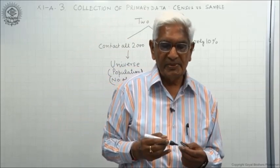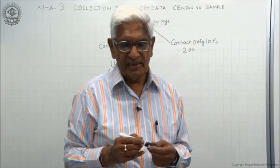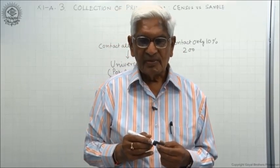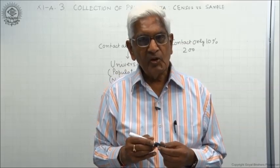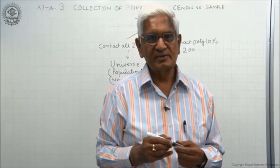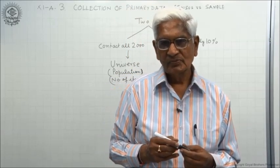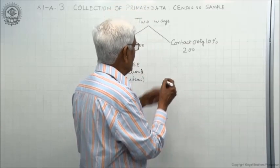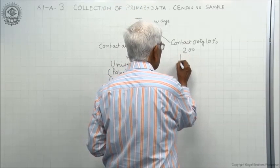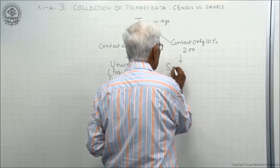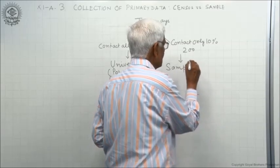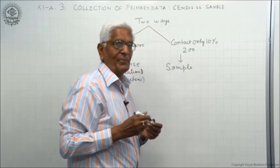Population here means the number of items to be covered in the survey. There may be people, there may be things, there may be anything. And when we contact a part of this universe — say only 200 — we call it a sample.